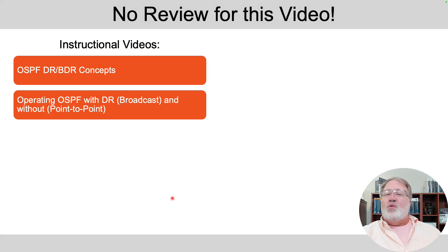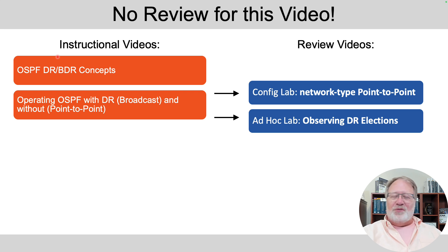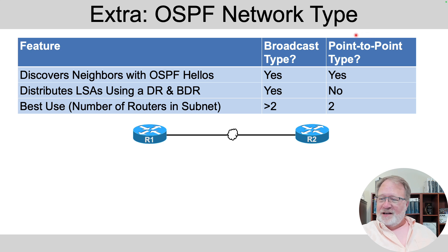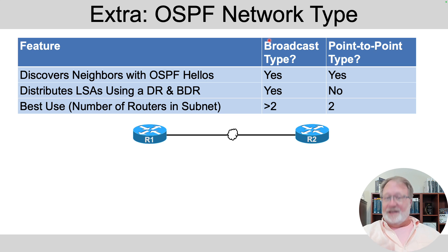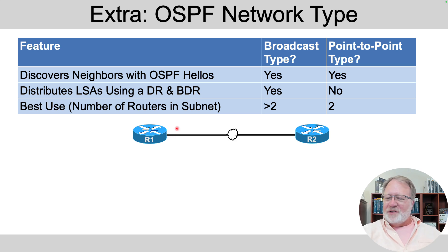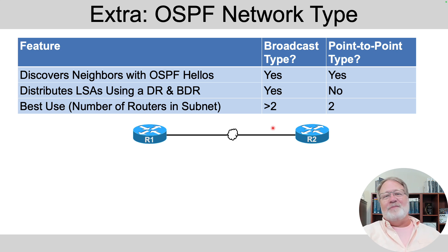There are no review videos associated with this first of the two videos for the section — the two review topics follow the next instructional video, so make sure to watch that next. That next video will bring up the idea of a network type for OSPF using the names point-to-point and broadcast. It's the broadcast network type that makes routers behave like we just talked about for the last 10 minutes — using a DR and a BDR. Whereas the point-to-point type is an alternative that makes sense when the topology is point-to-point with only two routers, and it's generally more efficient and better.